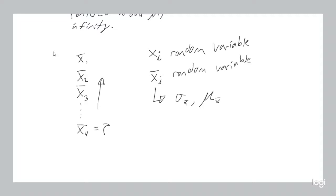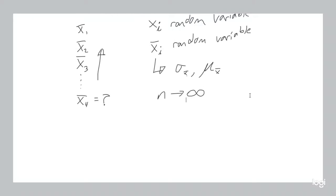What the central limit theorem tells you is that as the sample size used to get those sample means increases — technically, as that sample size approaches infinity — the distribution of your sample means, the distribution of all the sample means you could possibly get, gets closer and closer to the normal distribution.